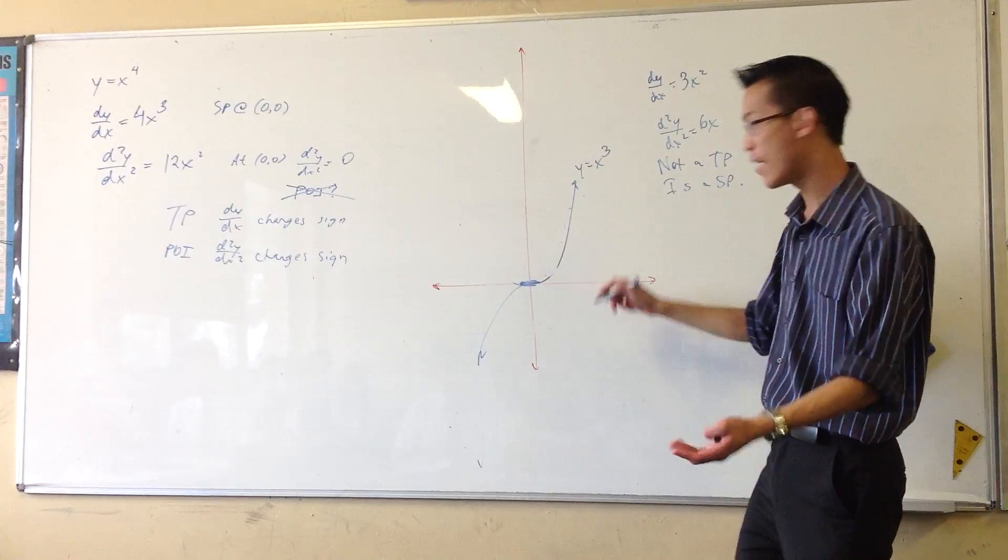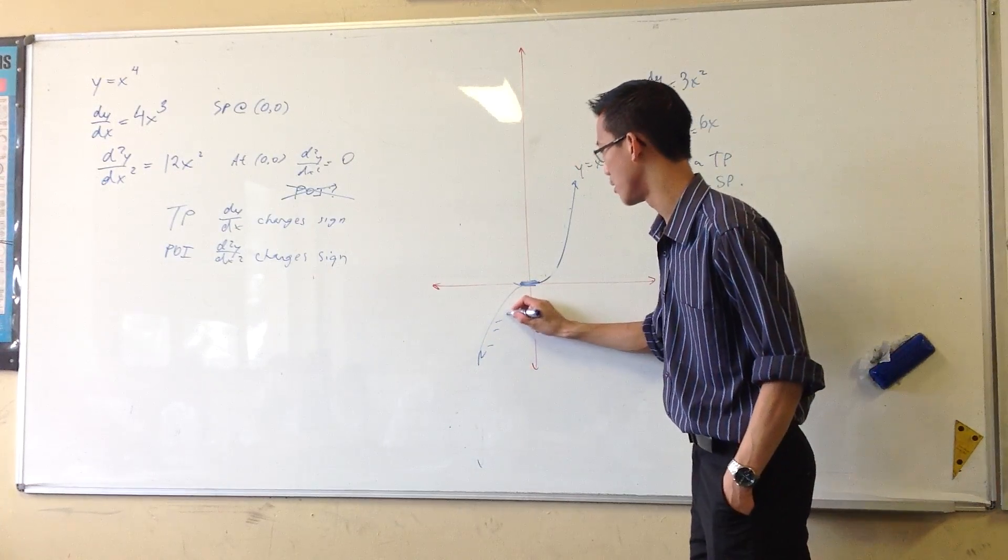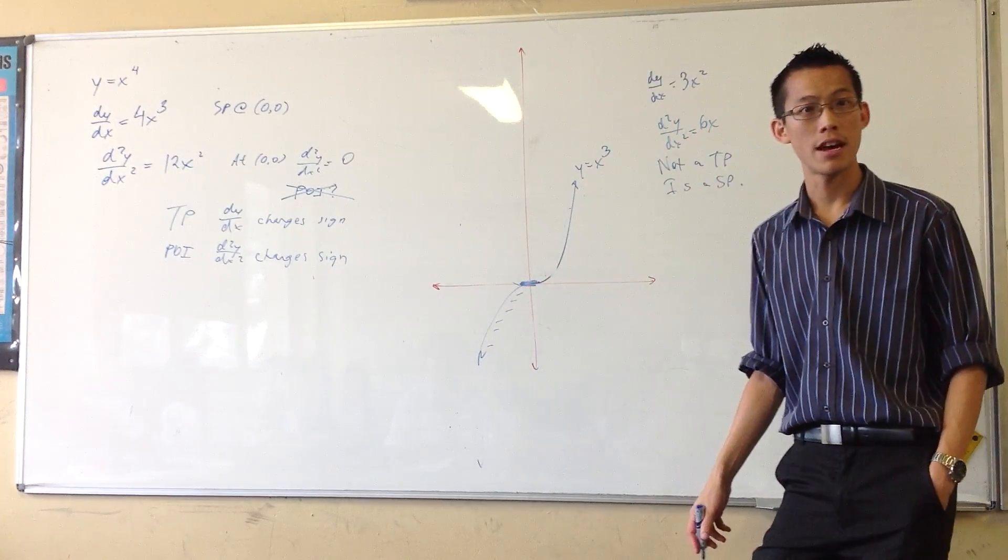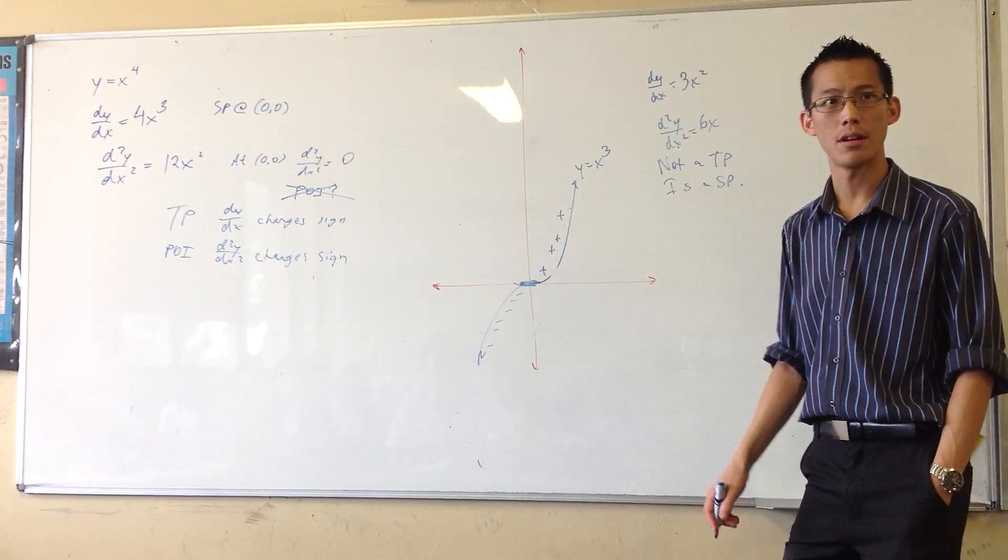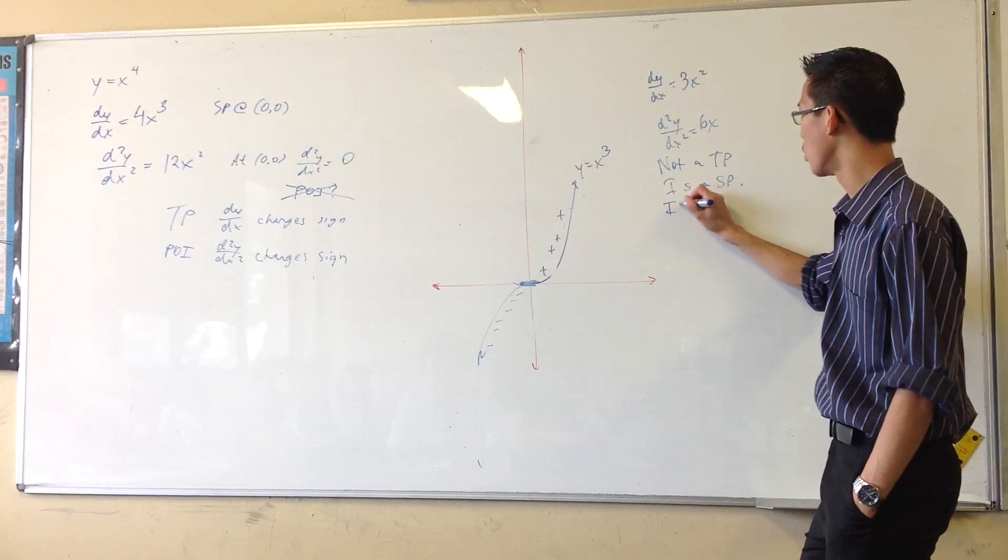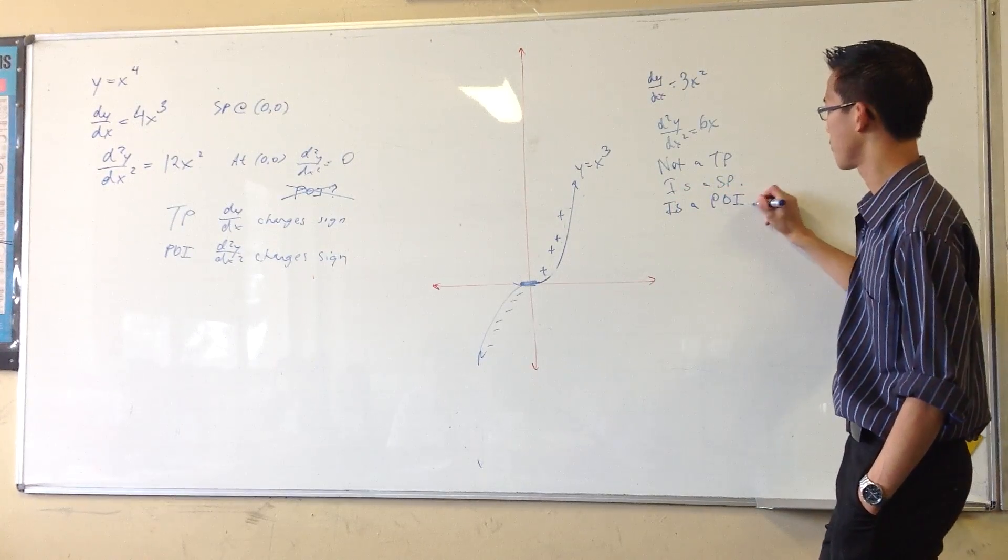There's a change in concavity. It's concave down for these values, right? And then it's concave up for these values, okay? So, it is also a point of inflection, okay?